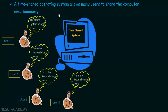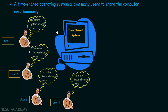To elaborate: let's say we have a time shared system with 4 users sharing it. The switching between the users' jobs takes place so quickly that users do not even realize they are sharing the system — they feel the entire system belongs to just them. Let's say user 1 wants to execute a job. The job is executed at CPU speed, which is very high. After execution, the output is shown to user 1, and then user 1 has to give some input back to the system — meaning they interact with the system.